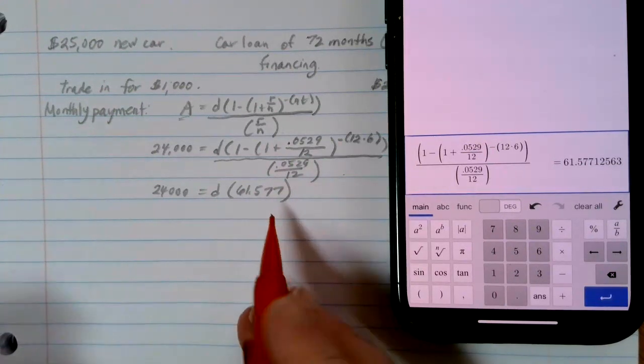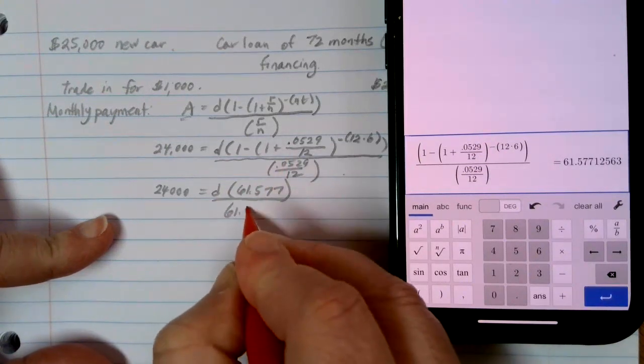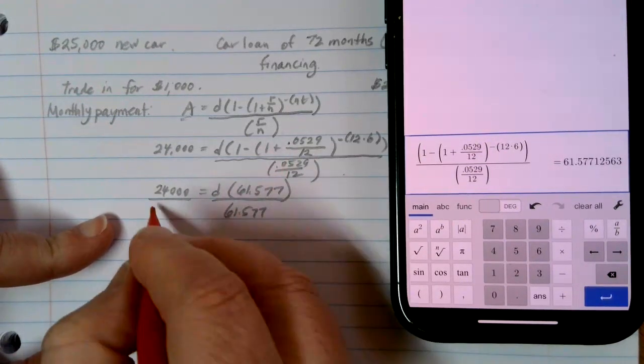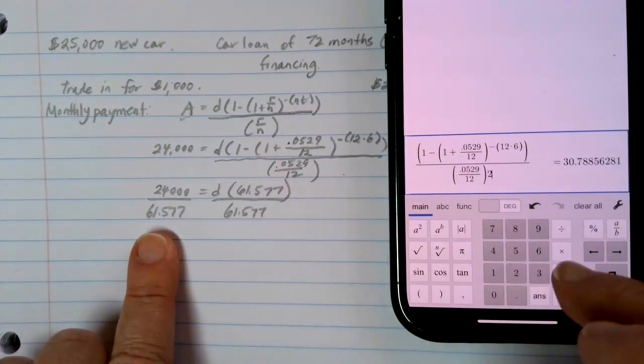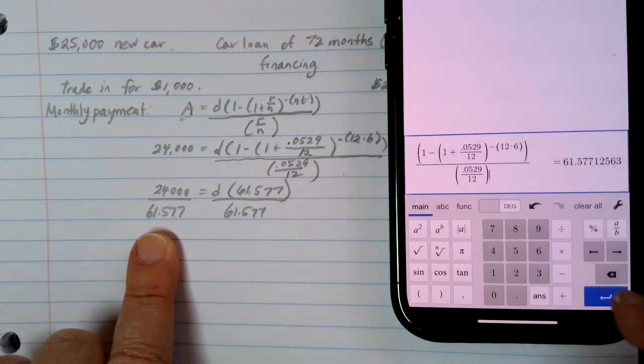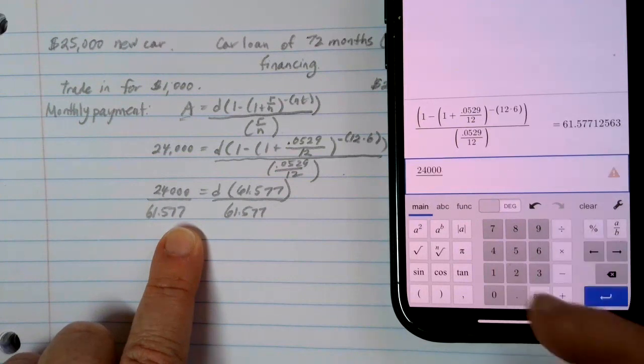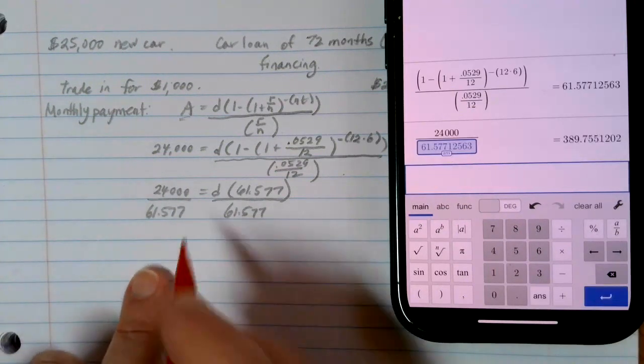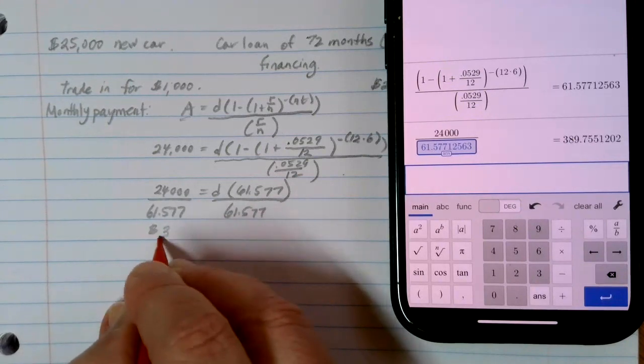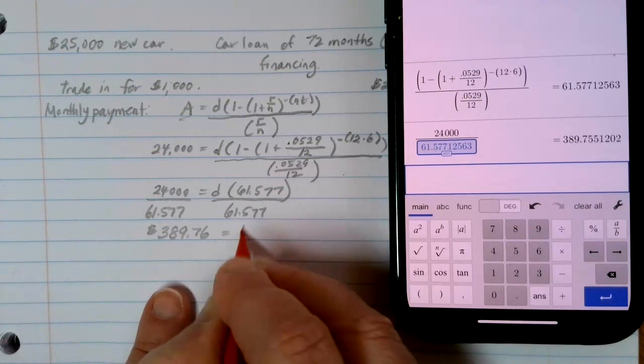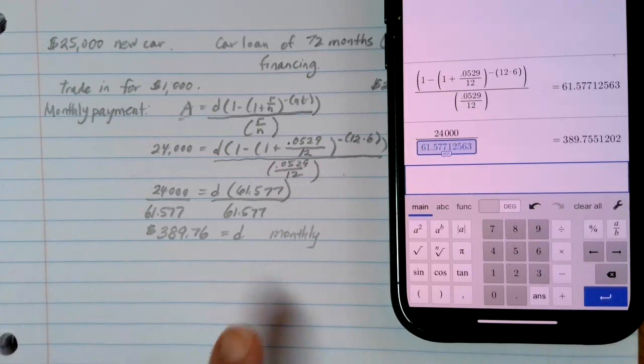This is being multiplied by the D. So if I want to figure out what that monthly payment is going to be, I can divide each side by that 61.577 number. We want to do 24,000 divided by that last answer, and we end up with $389.76. So this is my monthly payment on the car, and I'm doing this every month for six years.